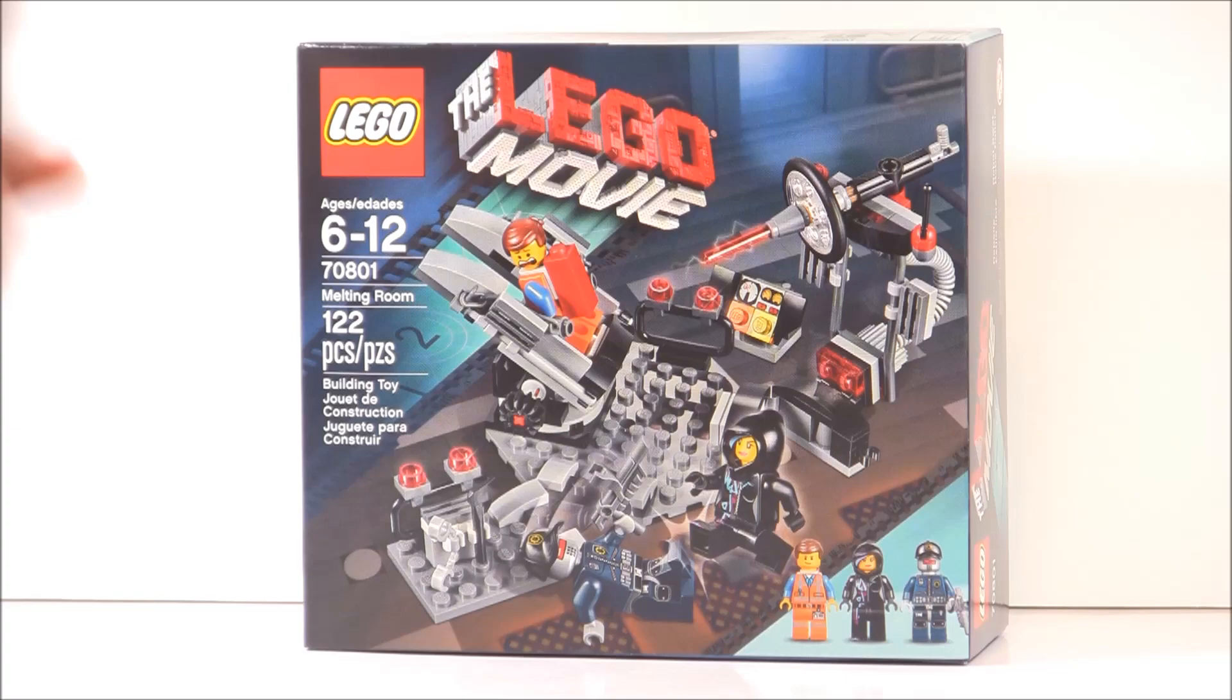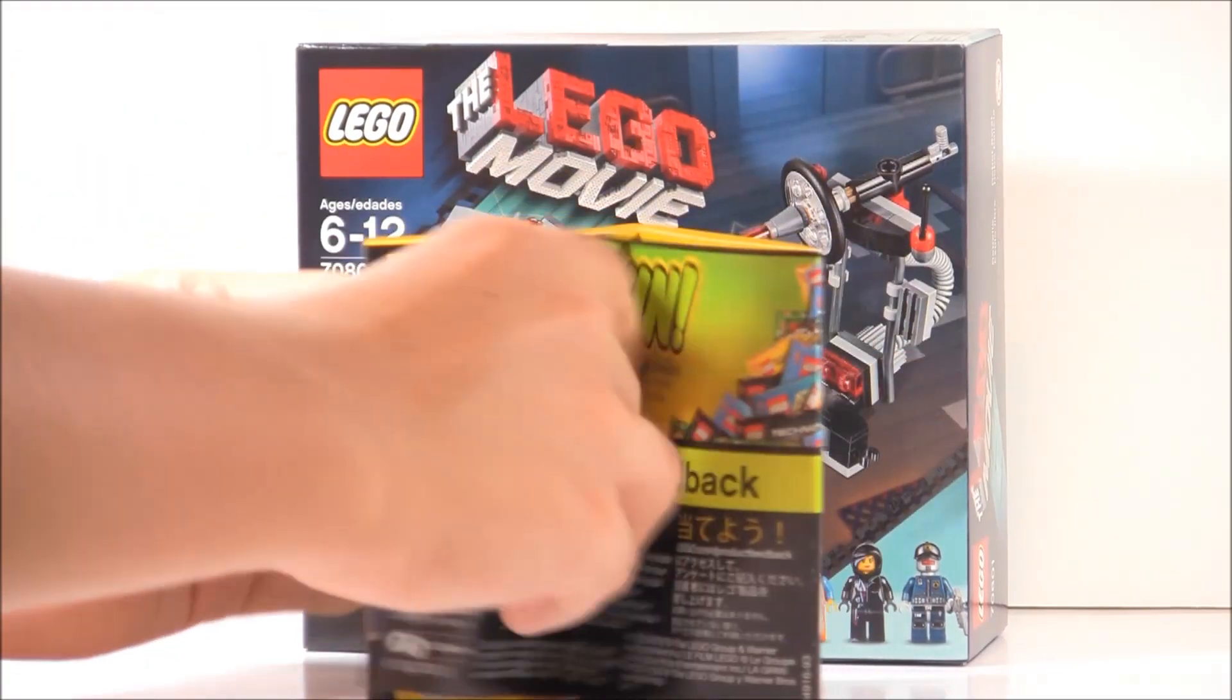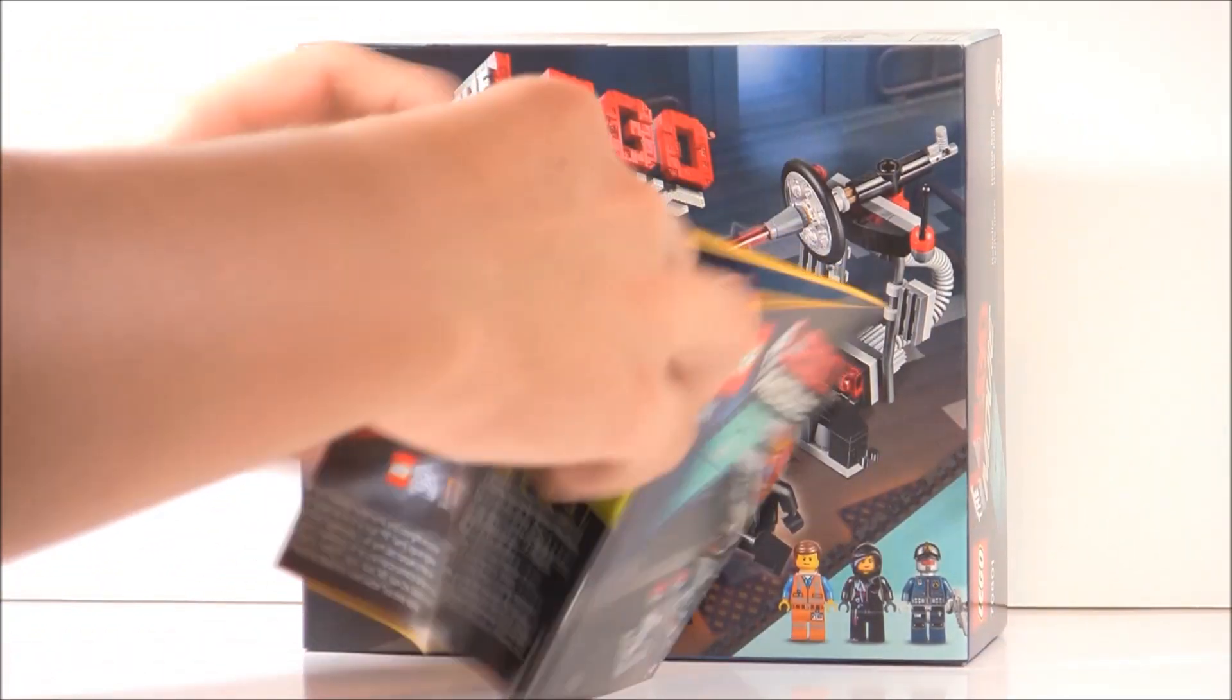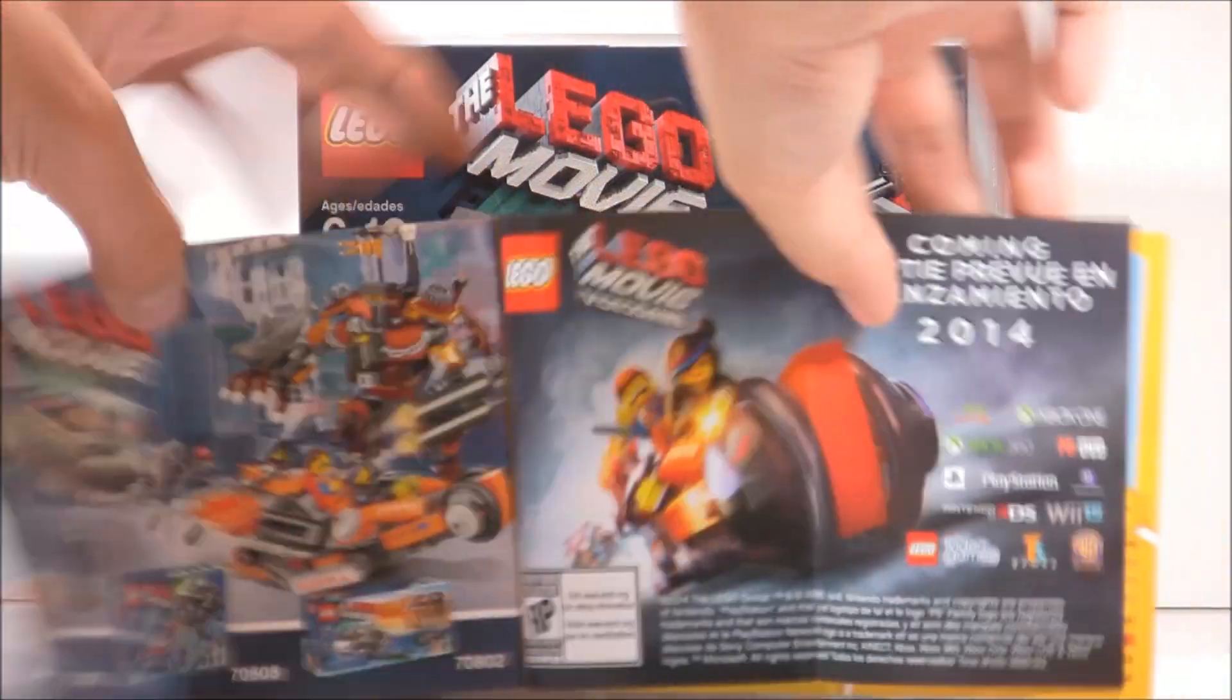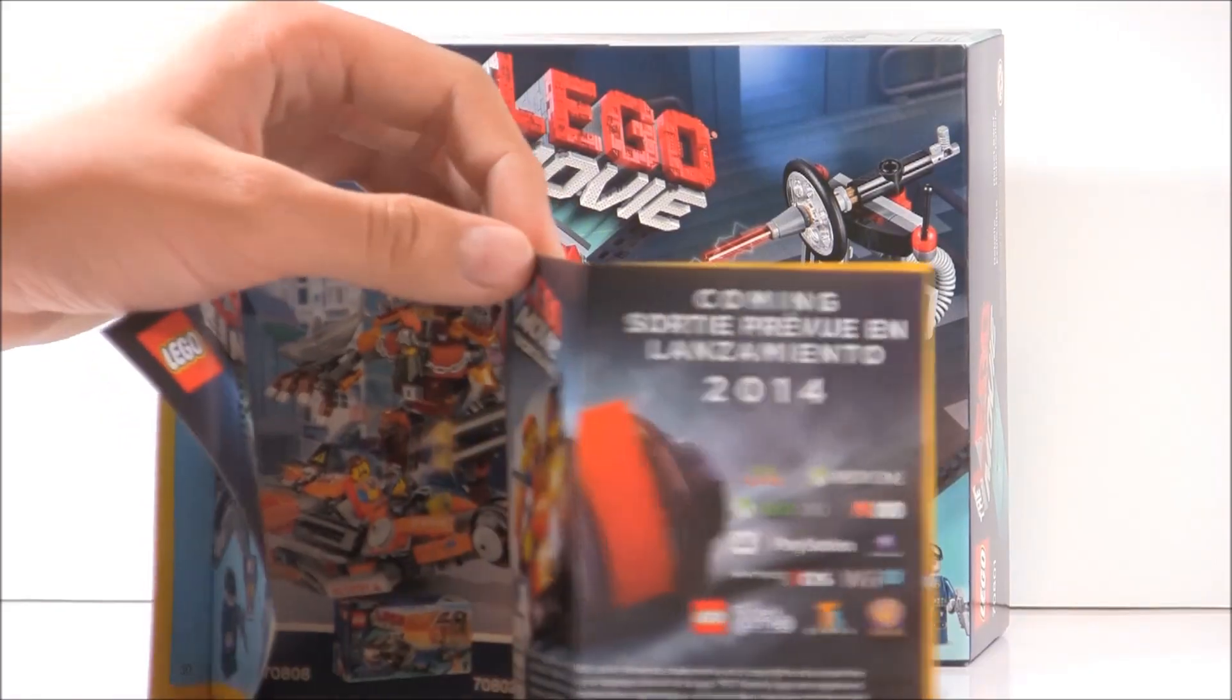You get an instruction booklet which is kind of long, but there are lots of pieces in the set. You can see the little advertisement like they usually show, and there's the advertisement for the game. Nothing really different from the other sets.